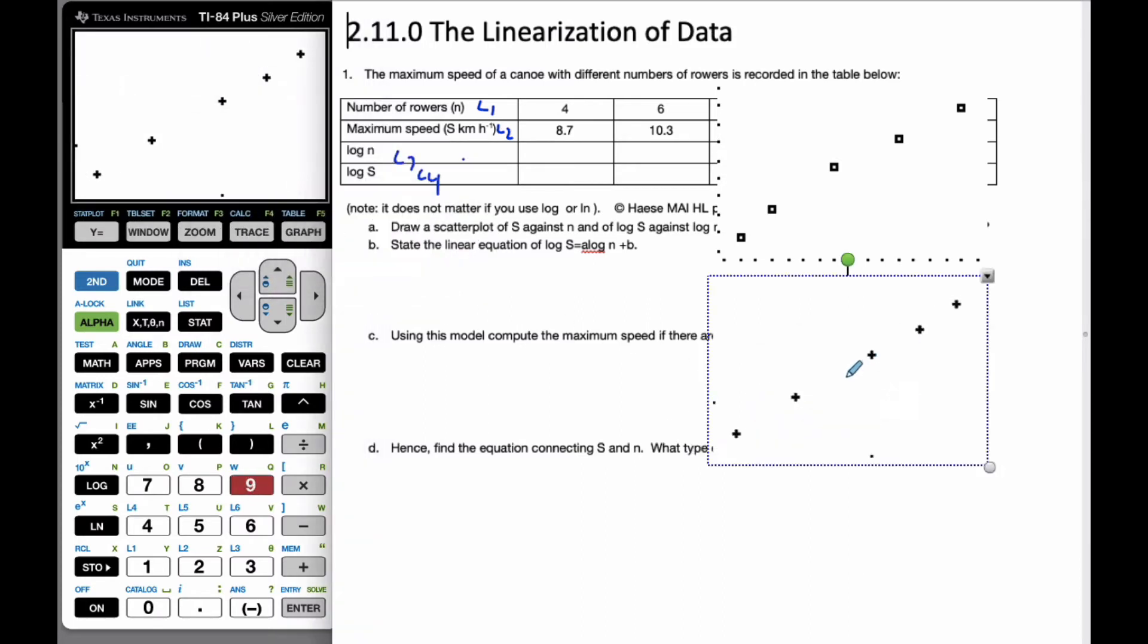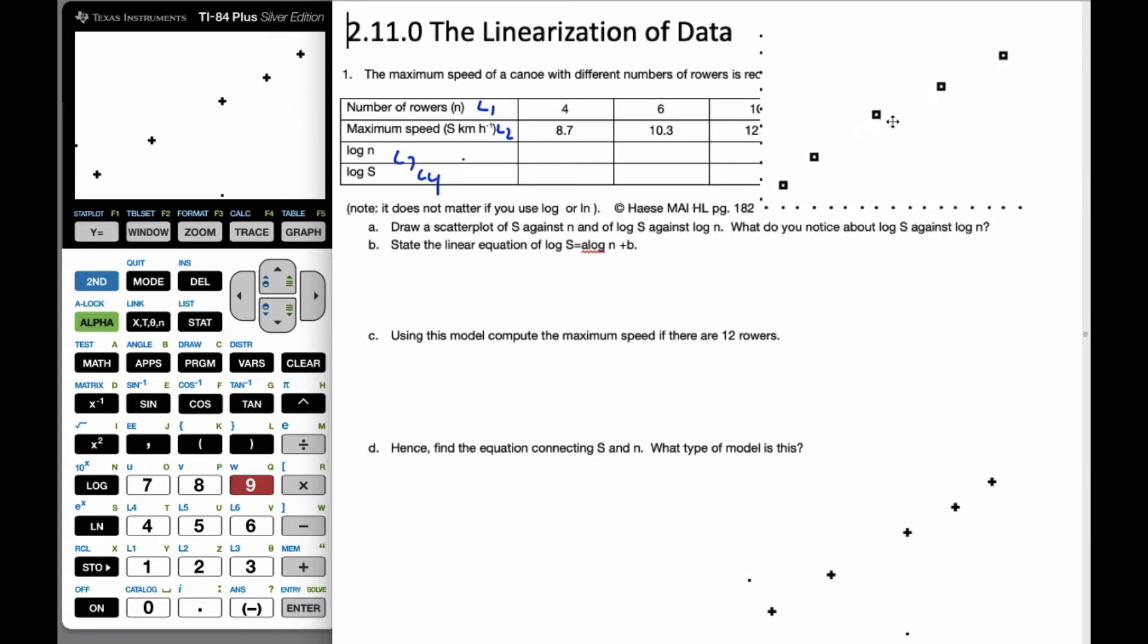And when I look at this graph here, what I notice is that this one is far straighter than this. This has a slight bend, but this is more straight. So I believe that the logarithm, logarithm graph is a better scenario. What do you notice about this? It is a linear relationship.